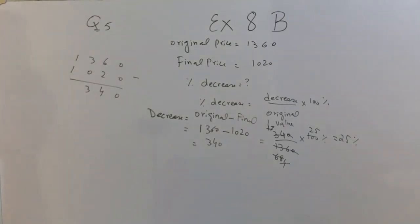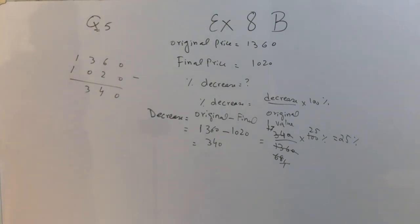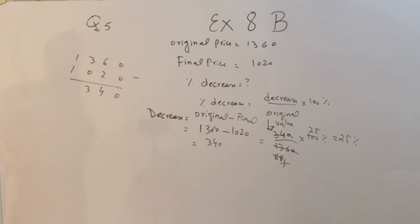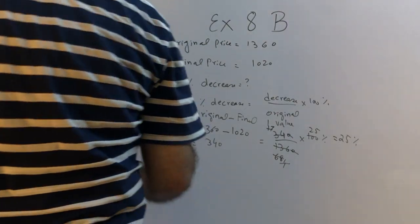To recap question five: the desktop computer's price decreased from $1,360 to $1,020. The decrease is $340. Using the formula — decrease over original value times 100 percent — we get 340 over 1,360 times 100 percent, which equals 25 percent.